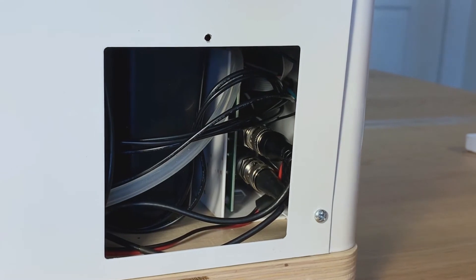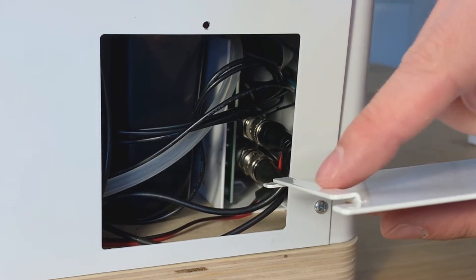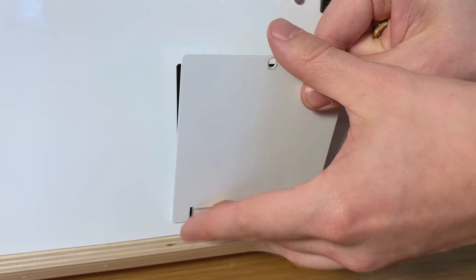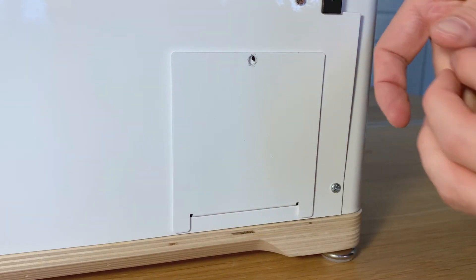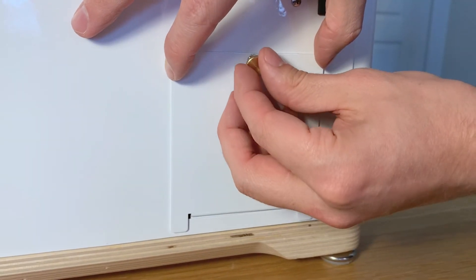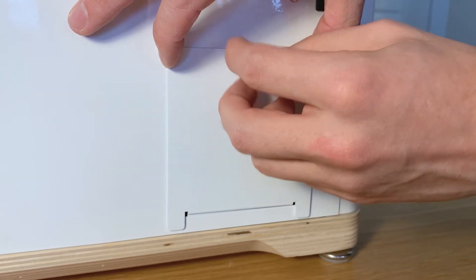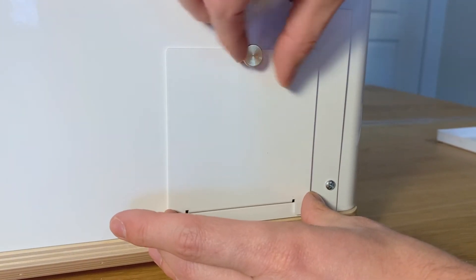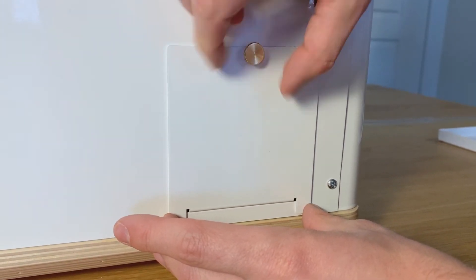When you're ready, replace the cover. You're going to make sure that this lip is actually on the inside. And then you're able to put the thumb screw back in. You don't want to over tighten this, just because that'll make it harder when you have to remove it next.